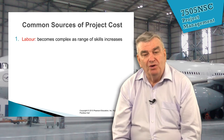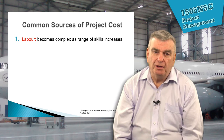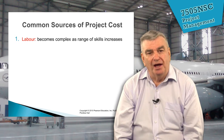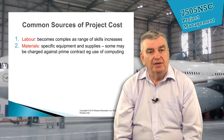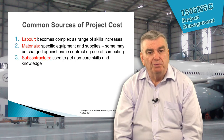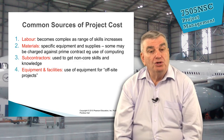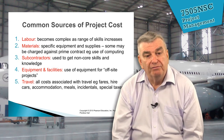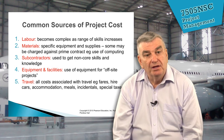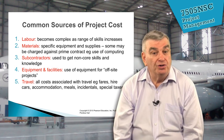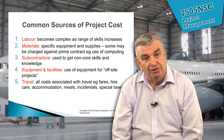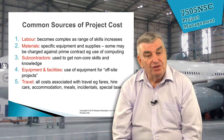What are the common sources of project costs? I always say, when you're thinking about projects, think of building a house. Obviously, labour. Then, of course, materials. This includes specific equipment and supplies, the subcontractors you bring in, the equipment and facilities you might need, and travel. Those are the five categories of sources of cost. They're what you encounter when you build a house, but they're exactly the same ones you get when you build an Airbus A350 or a Boeing 787.